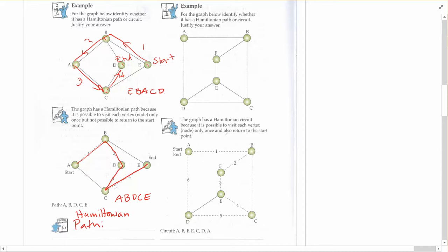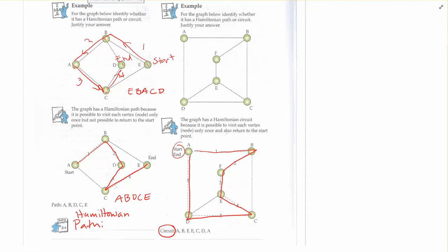And the other example that they have here, following what they've got, if you start at A, you go from A to B to F to E to C to D back to A. You start and end on the same. So in this case, you have a circuit.